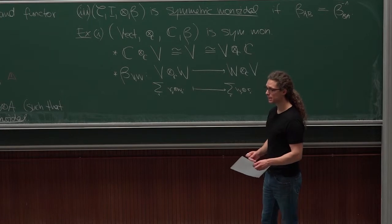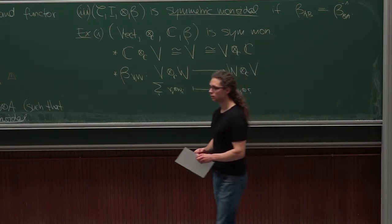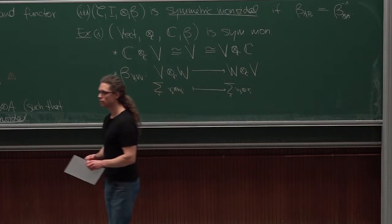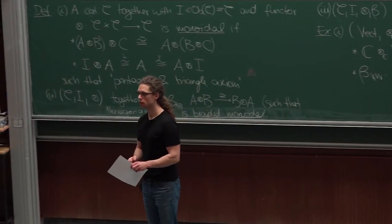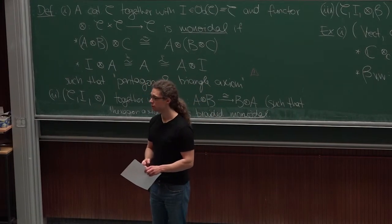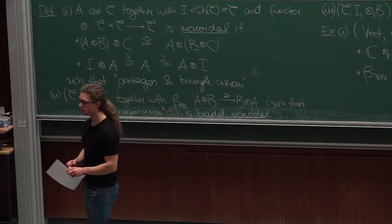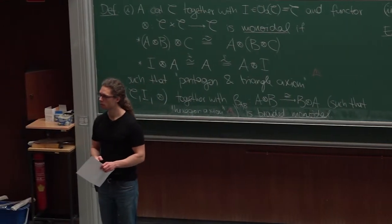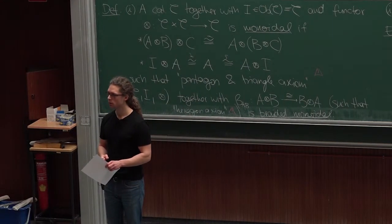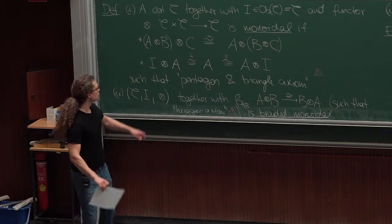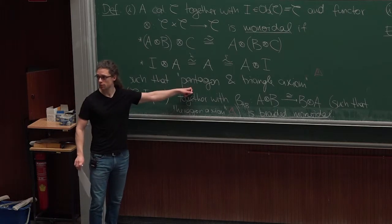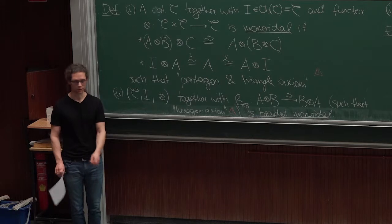If you take the direct product and the identity as the zero vector space, it looks like it might satisfy things. But if you take the direct sum, this will not satisfy the axioms — the pentagon and triangle axioms.